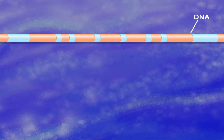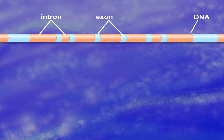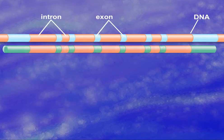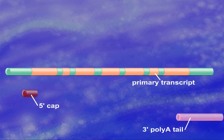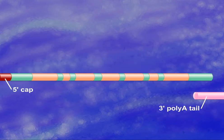Eukaryotic genes consist of coding sequences of nucleotides called exons and non-coding sequences called introns. The product of transcription, called the primary transcript, is formed with a 5' cap and a 3' poly-A tail.